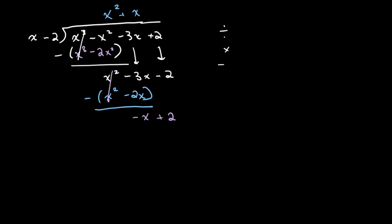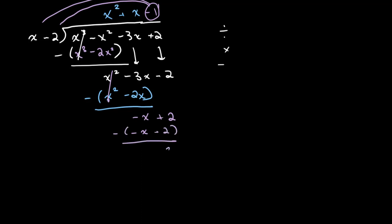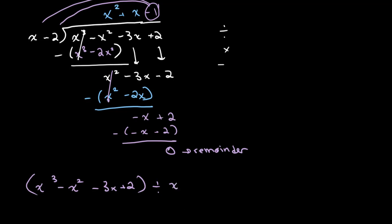Once again we divide, multiply, and subtract. We divide x by x, which gives us a value of negative 1. Then we multiply negative 1 by x minus 2, giving us negative x plus 2. We subtract, and this gives us 0, which is our remainder. So we can rewrite this as x cubed minus x squared minus 3x plus 2 divided by x minus 2 equals x squared plus x minus 1.